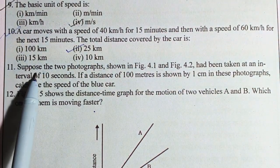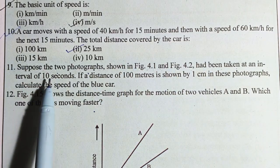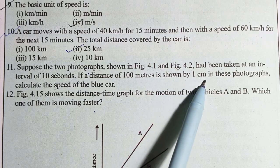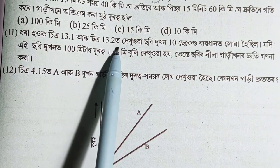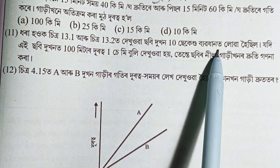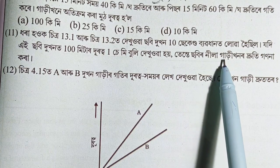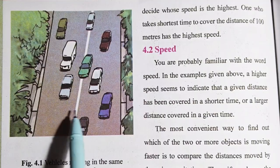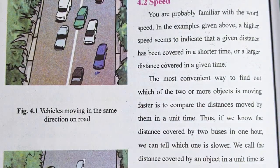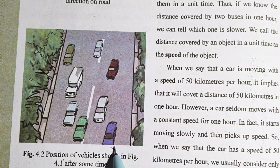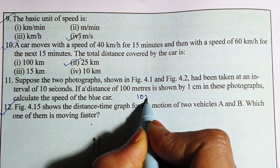Question number 11: suppose the two photographs shown in figures 4.1 and 4.2 had been taken at an interval of 10 seconds. If a distance of 100 meters is shown by 1 cm in these photographs, calculate the speed of the blue car. The answer is 10 meters per second.